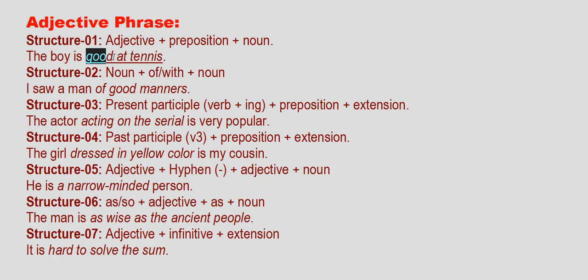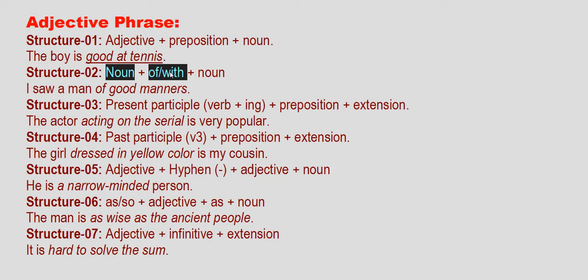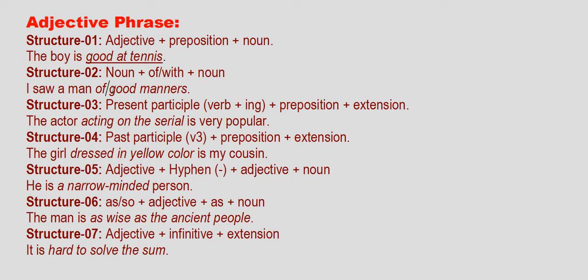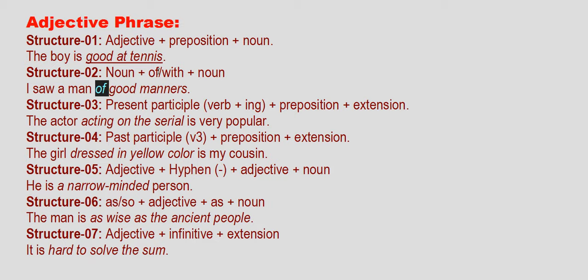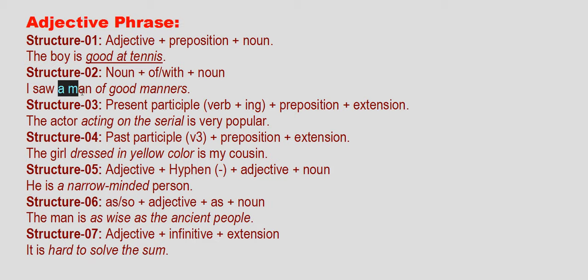This is the adjective phrase. For the noun — which is the noun — 'when I saw a man, I saw a good kind of good manner.' Good manners is the idea of a good person. This means the adjective phrase modifies the noun.